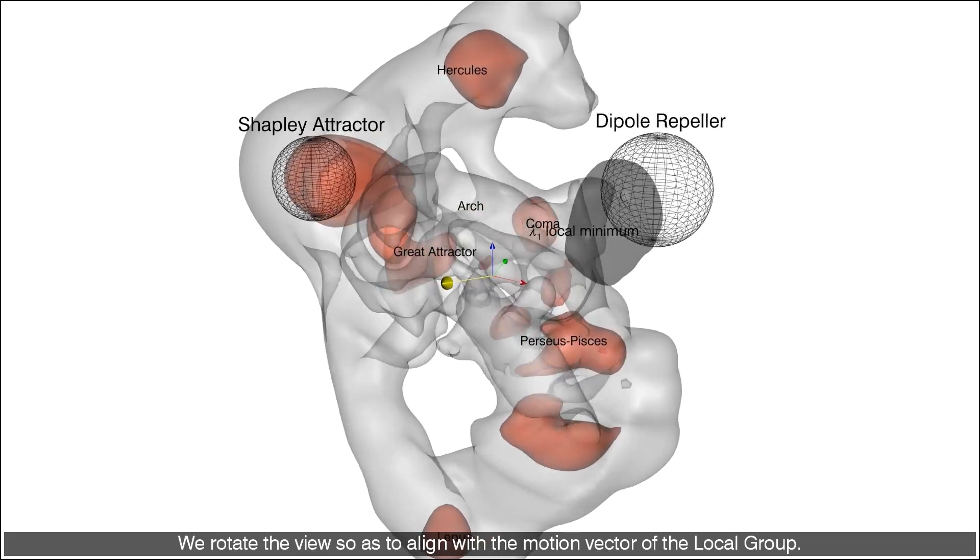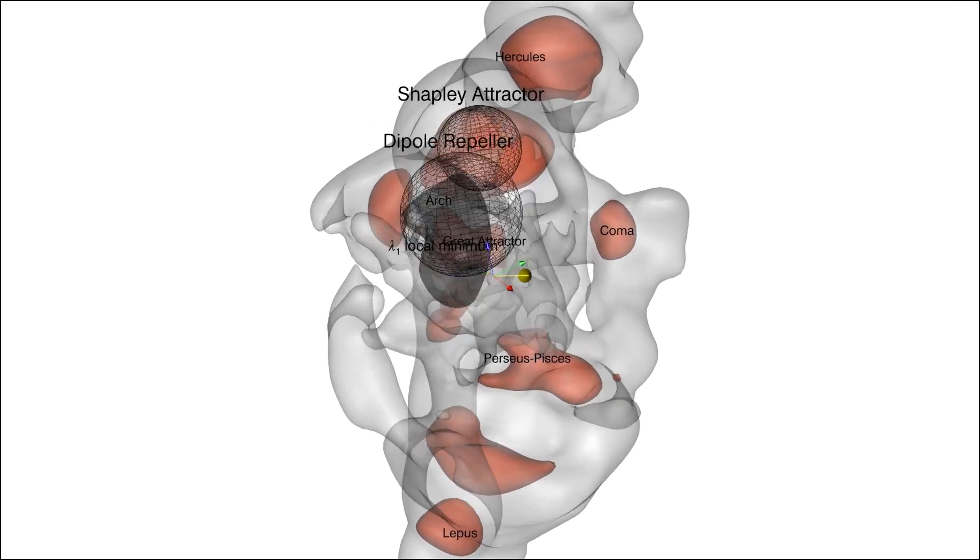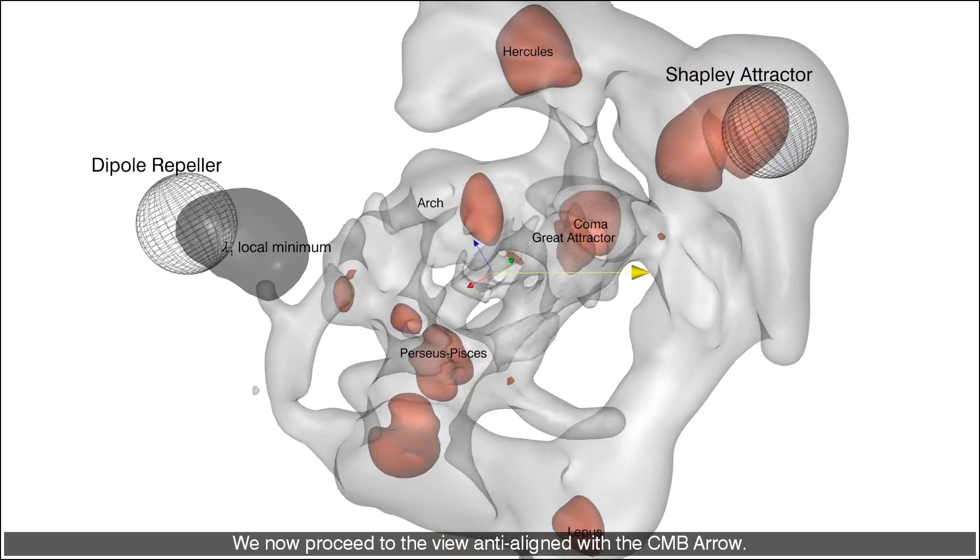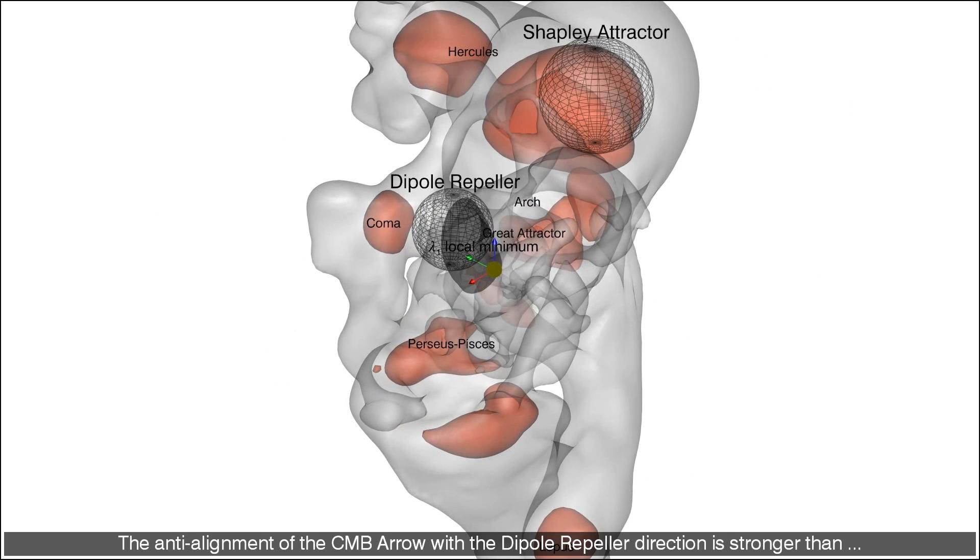We rotate the view so as to align with the motion vector of the local group. This motion is aligned with the region of the dipole repeller. We now proceed to the view anti-aligned with the CMB arrow. The anti-alignment of the CMB arrow with the dipole repeller direction is stronger than its alignment with the Shapley attractor.